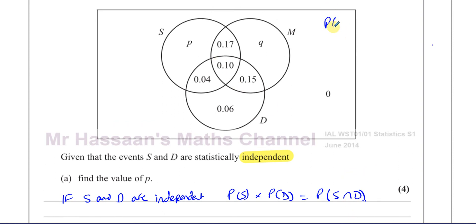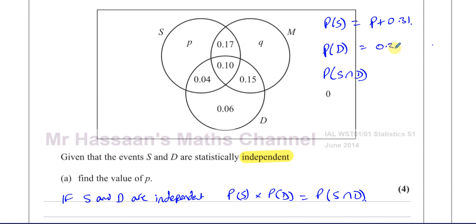I'll write down P(S), P(D), and P(S∩D). The probability of S is all of the S circle added together: 0.04 + 0.14 + 0.17 + P = P + 0.31. The probability of D is 0.10 + 0.10 + 0.15 = 0.35. The probability of S∩D is 0.14. Now we have all we need to set up an equation.